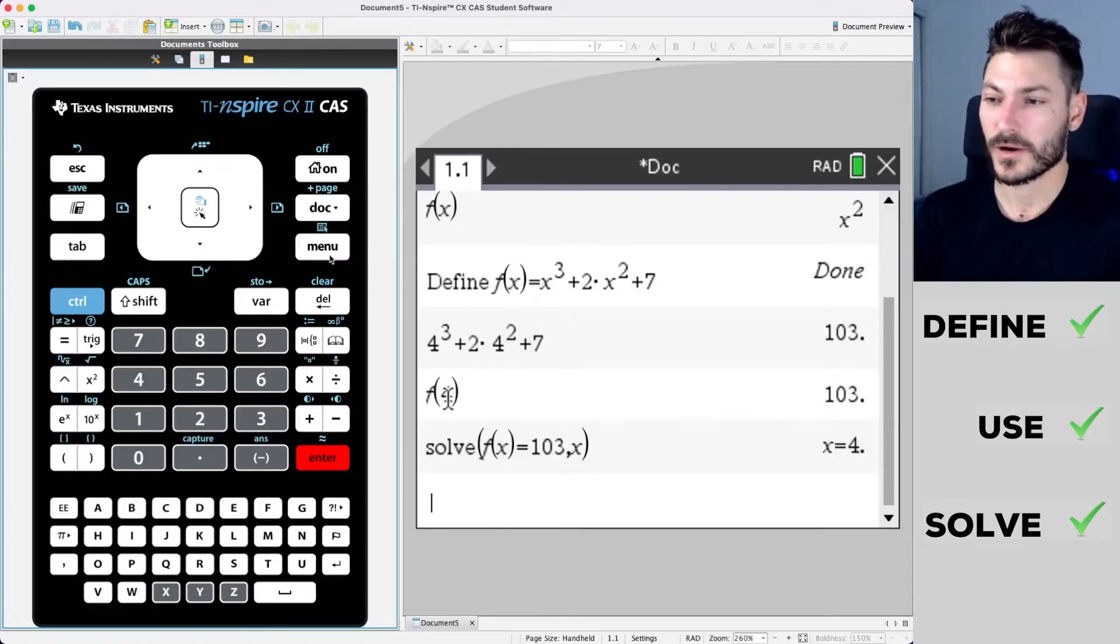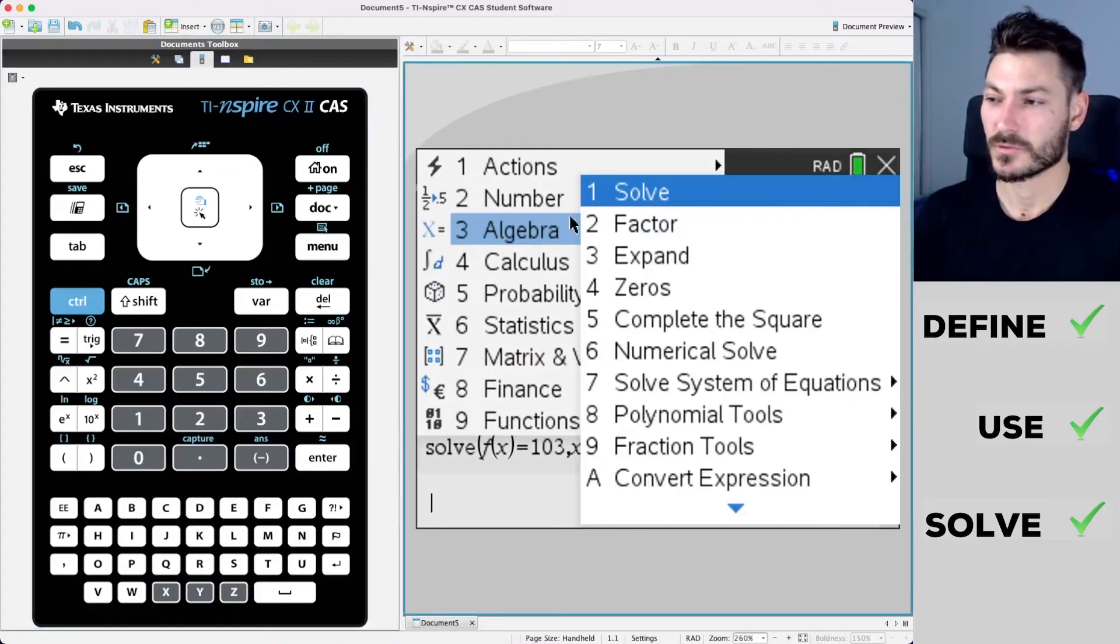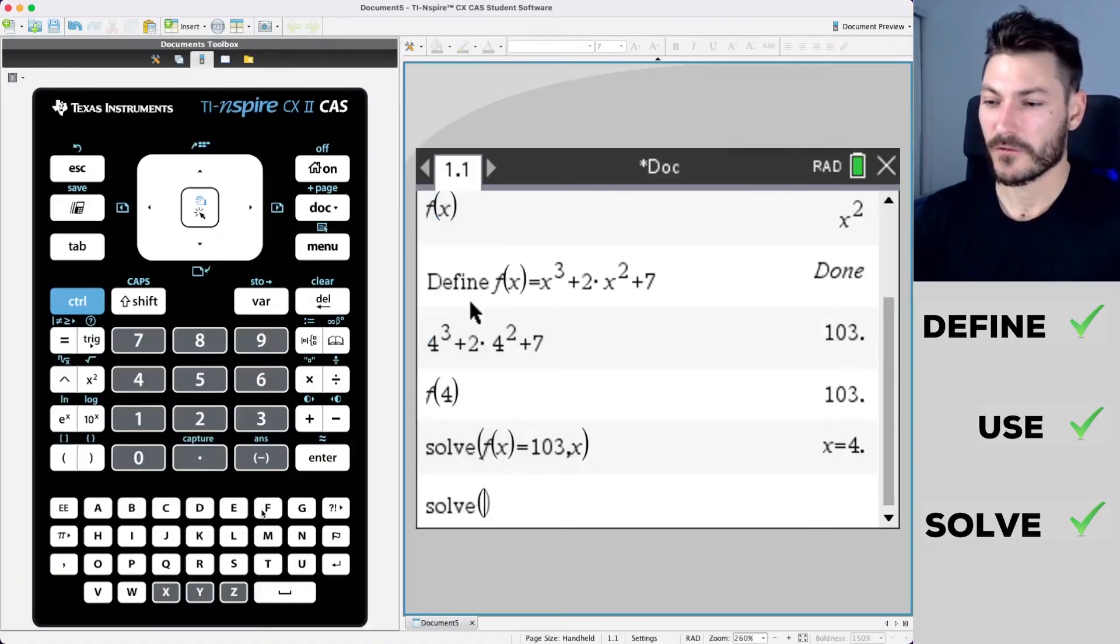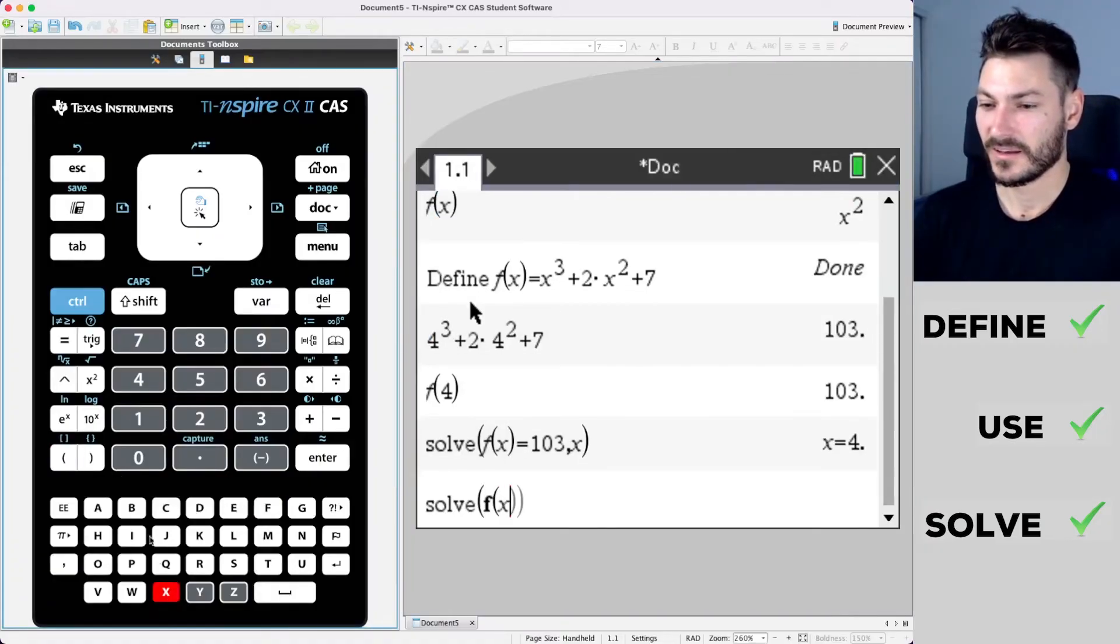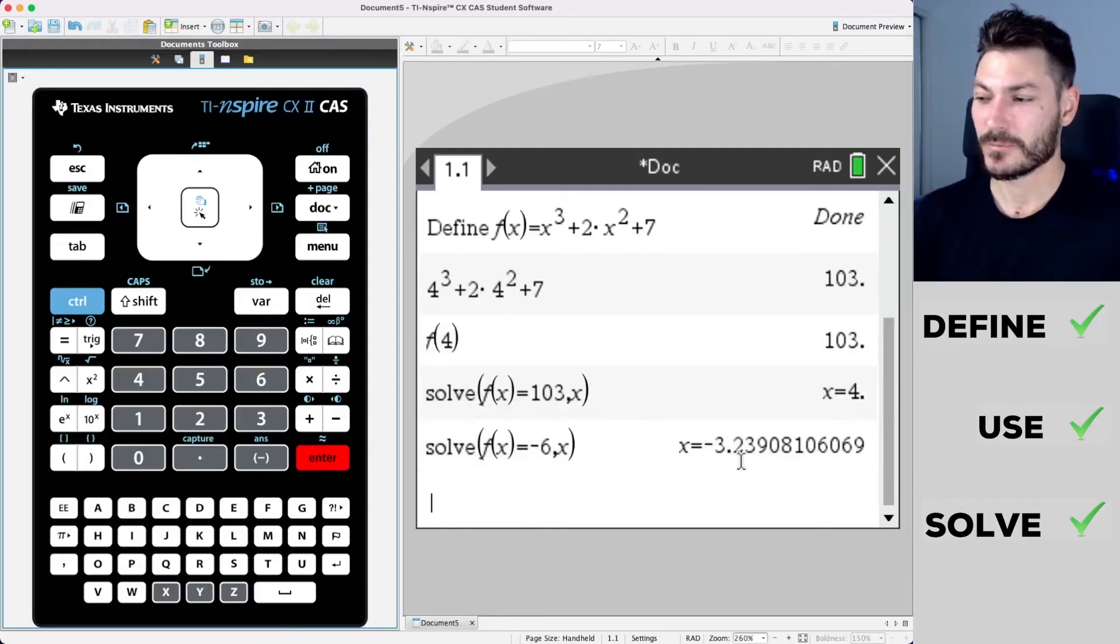We can do one more to practice. Menu, algebra, solve. And we're going to solve when the function of x, and we'll do a negative number now, equals negative 6. And we are solving comma for x enter. The answer is negative 3.24 to two decimal places.